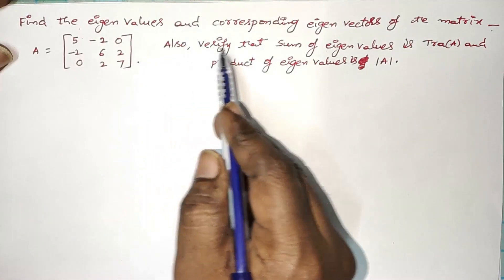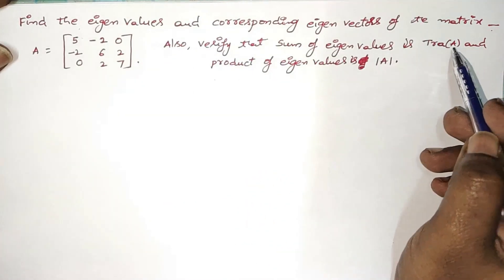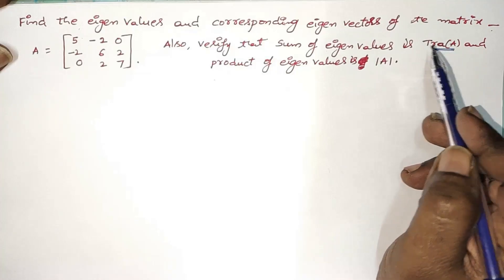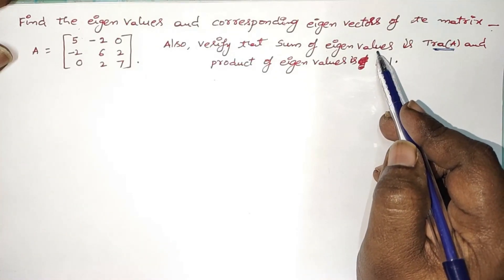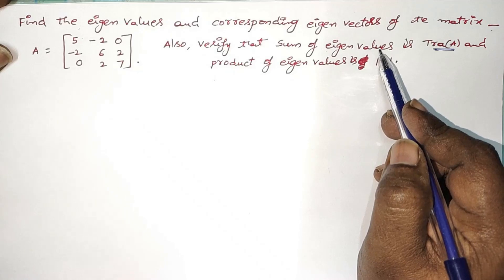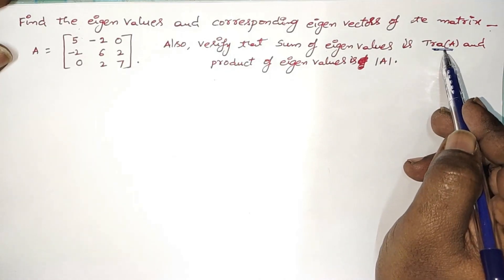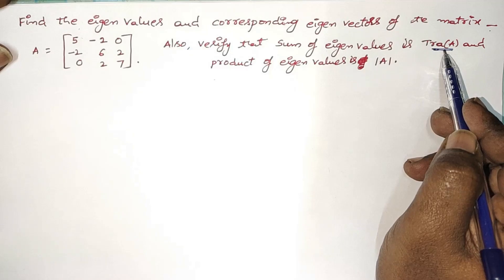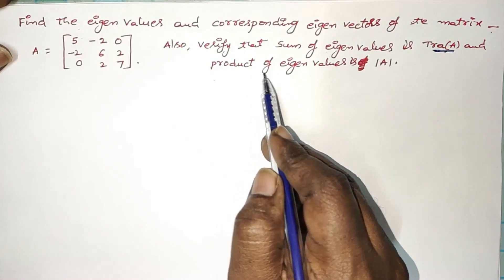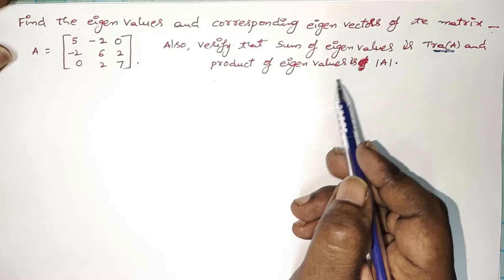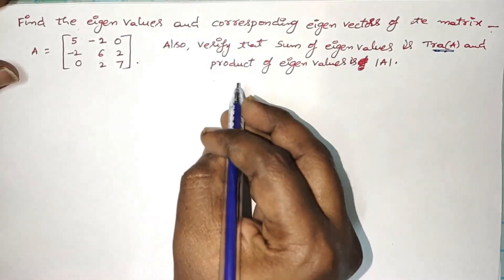Also, we have to verify that the sum of eigenvalues is the trace of A. After getting eigenvalues, we have to check that the sum — meaning addition — of eigenvalues is the trace of A. The trace of A is the sum of diagonal elements of the given matrix, and the product of the eigenvalues is the determinant of A. We have to prove these two properties.